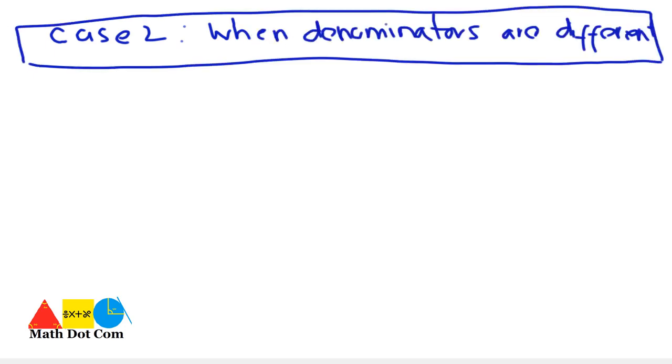Now in case 2 we have when denominators are different. Here we will again be having an example. That is this is the number. How you can subtract? Again first you have to remove the bracket. 4 over 5 minus and minus plus 3 by 2.